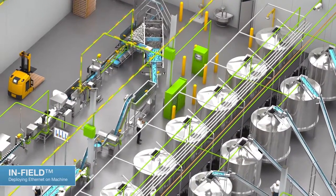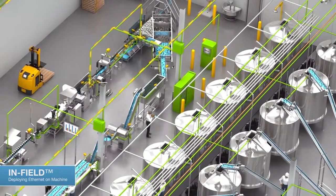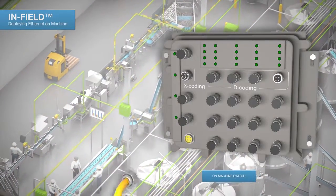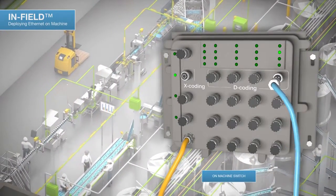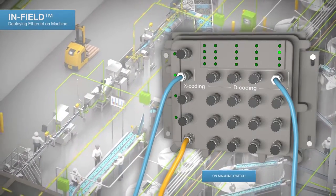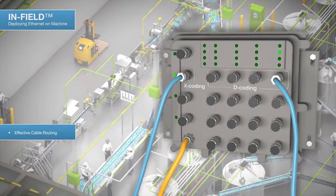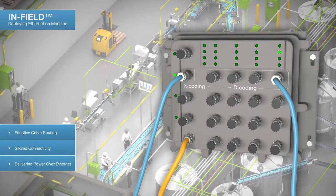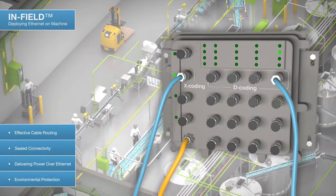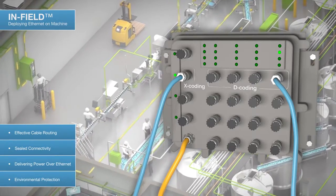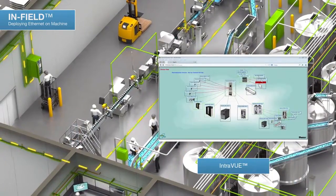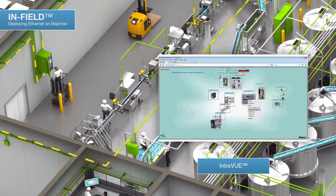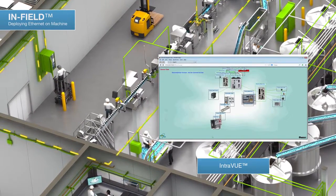Panduit in-field solutions deploy Ethernet to machine, providing a high-performance, reliable, and scalable network by implementing appropriate cabling infrastructure for each network layer. Implementing the appropriate cabling infrastructure from control panel to machine addresses effective cable routing, sealed connectivity, delivering Power over Ethernet, and environmental protection in the harshest environments, while maximizing plant uptime and ensuring lasting reliability. IntraView software provides documentation of the industrial network systems and monitors in-field devices to proactively maintain system performance.